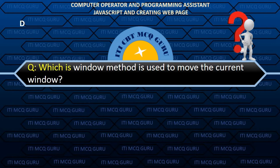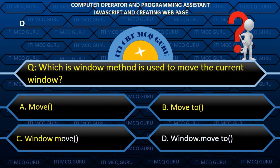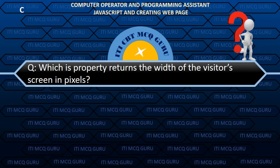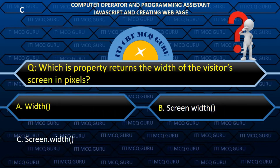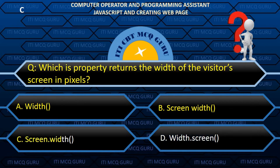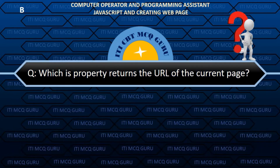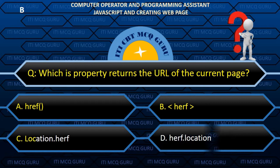Which window method is used to move the current window? B. Window.moveTo. Which property returns the width of the visitor's screen in pixels? C. Screen.width. Which property returns the URL of the current page? B. Location.href.